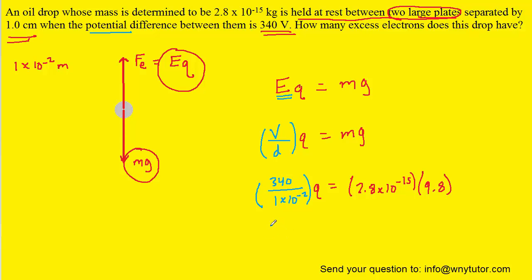Now if we simplify, on the left side we're going to have 34,000 times Q. And then on the right side we have 2.744 times 10 to the minus 14. Let's go ahead and divide both sides by 34,000. And when you do that you should get approximately 8.07 times 10 to the minus 19.